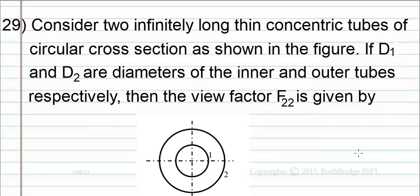Consider two infinitely long thin cylindrical tubes of circular cross section as shown in the figure. If d1 and d2 are diameters of the inner and outer tubes respectively, then the view factor f22 is given by: